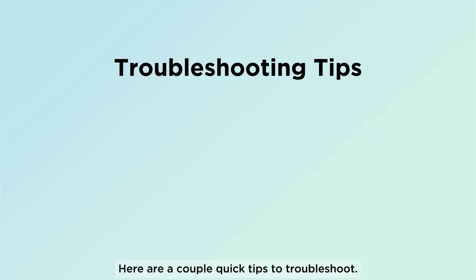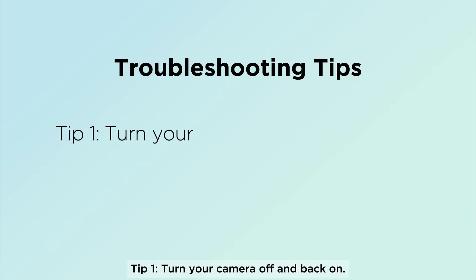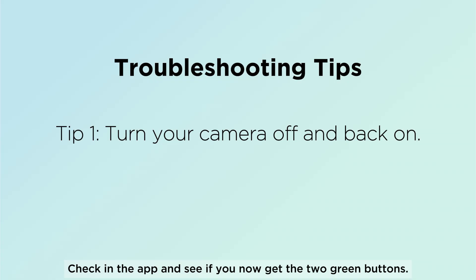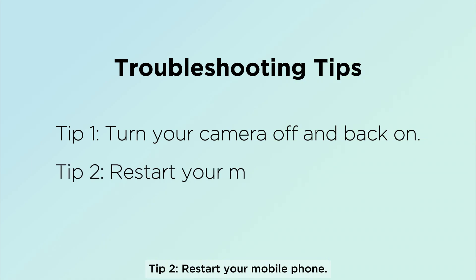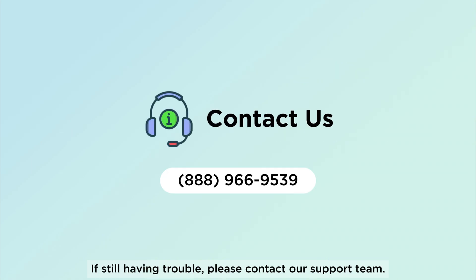If your screen shows one or two red buttons saying Disconnect USB or Inactive, your connection is not working yet. Here are a couple of quick tips to troubleshoot. Tip 1: Turn your camera off and back on, then check the app to see if you now get the two green buttons. If still seeing red buttons, try Tip 2: Restart your mobile phone. If still having trouble, please contact our support team.